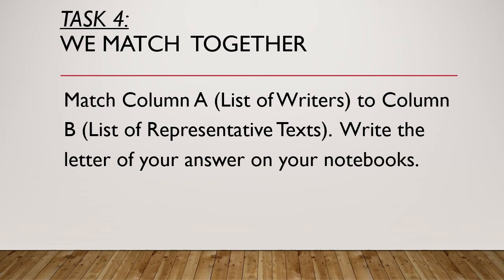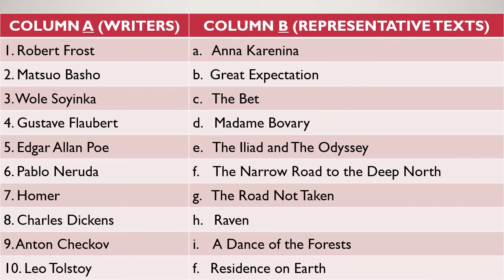Next, let's proceed to Task 4 — We Match Together. Match Column A, which is the list of writers, to Column B, which is the list of representative texts. Write the letter of your answer in your notebooks. Column A writers: Robert Frost, Matsuo Bashō, Wole Soyinka, Gustave Flaubert, Edgar Allan Poe, Pablo Neruda, Homer, Charles Dickens, Anton Chekhov, and Leo Tolstoy. What do you think is the representative text of Robert Frost? Do it on your notebooks.